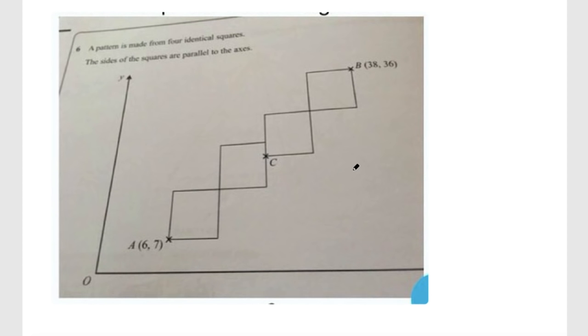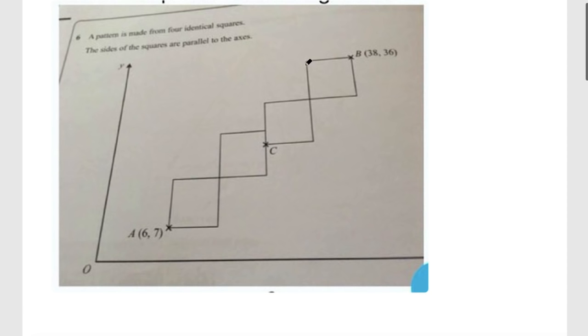Is this the hardest problem in the paper? I find that hard to believe, but let's go ahead and break this down. We know they're identical squares, so we can pretty easily find the length of the side of the squares.